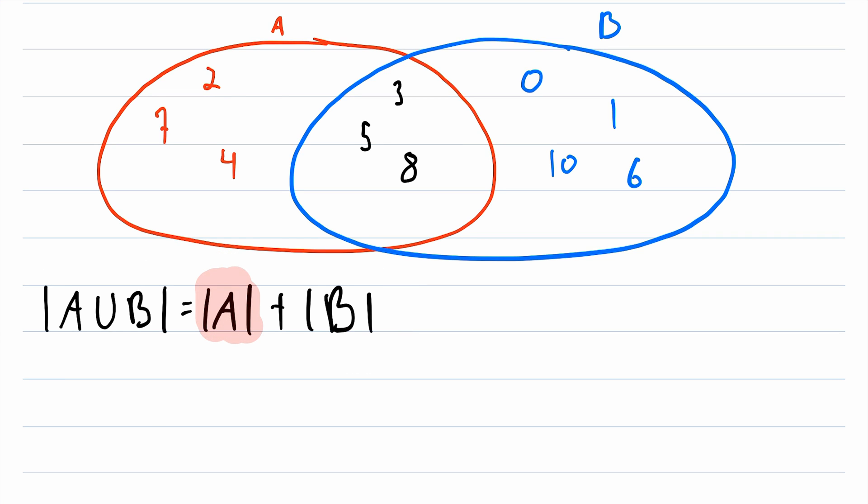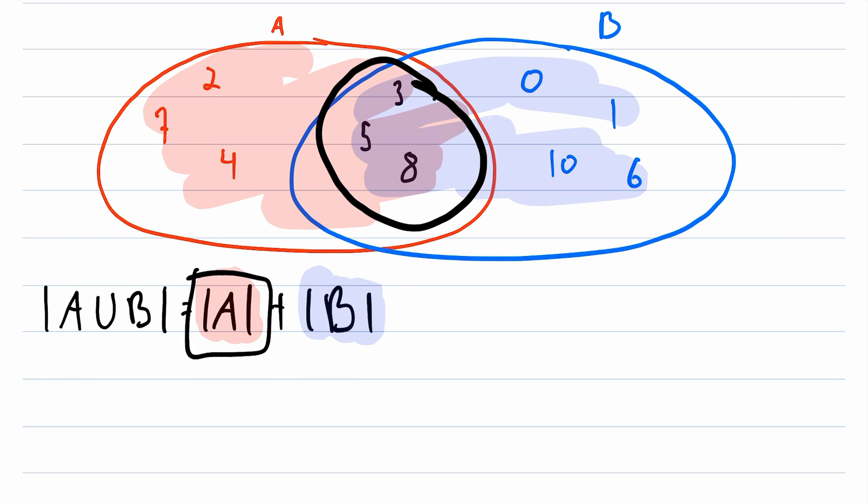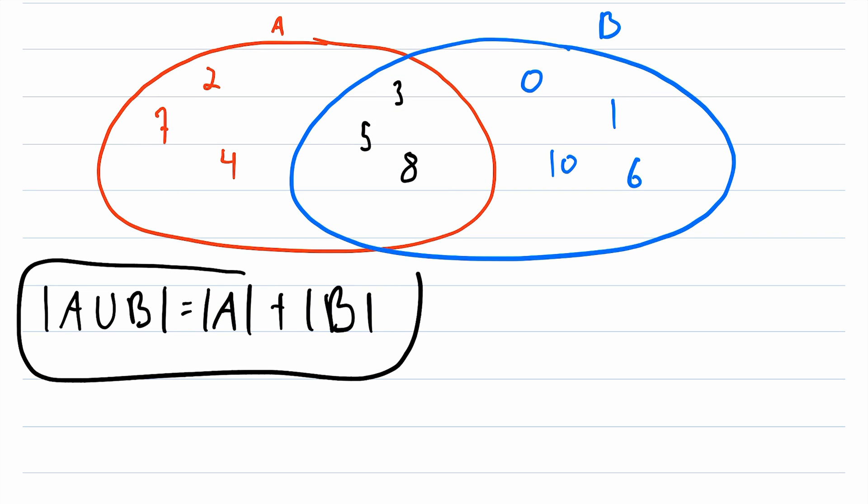When you add the cardinality of A, you're adding a count of all of these elements. Then when you add the cardinality of B, you're adding a count of all of these elements. So do you see the problem? We've double counted these elements that are in the intersection of A and B. Because we added them to our count with the cardinality of A, but then we added them again with the cardinality of B. So how do we correct this count? Well, since the problem is that we counted A intersect B twice, all we have to do is subtract the cardinality of A intersect B.